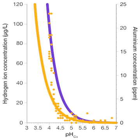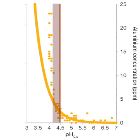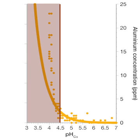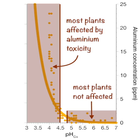If we fit a line to these data, you can see a strong relationship between soil pH and soil aluminium. Below pH 4.5, most plants are affected by aluminium toxicity. But above pH 4.8, most plants are not affected by aluminium toxicity.